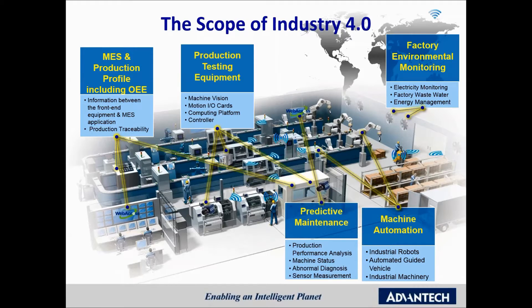We can define five areas in factory automation where data acquisition, analysis, and improvement make the most sense and have the highest impact: Management Execution System (MES) including OEE, quality and inline production testing, factory facilities, environmental monitoring, and machine automation in general including robotics, AGV, and machine vision. These five areas are also the focus areas for Advantech within Industry 4.0.